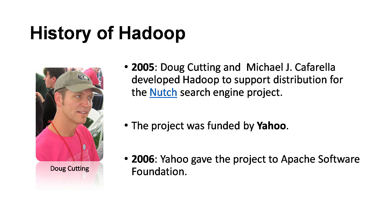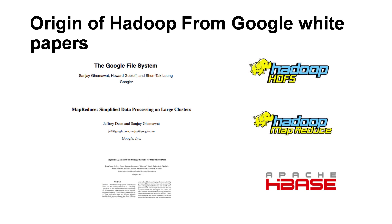Doug Cutting and Michael Cafarella referred mainly to a couple of white papers from Google. The first one is the Google File System — a white paper explaining how Google maintained its file system. They did not publish the code; they just published the white paper on how they were storing data.